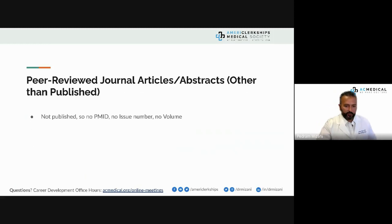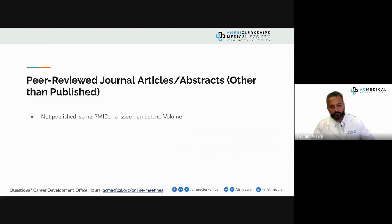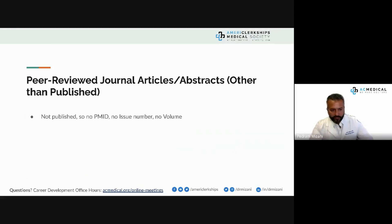For peer-reviewed journal articles and abstracts other than published, these are not yet published, so there's no PubMed ID, no issue number, no volume. Since they are not published, there wouldn't be any PubMed ID.